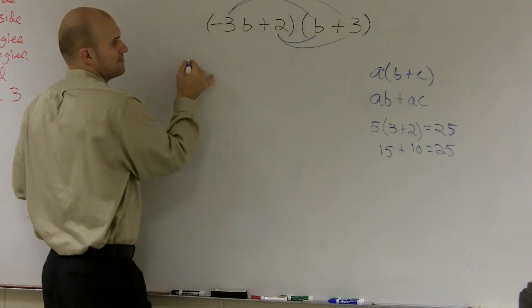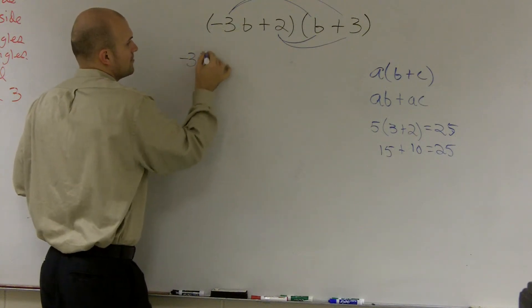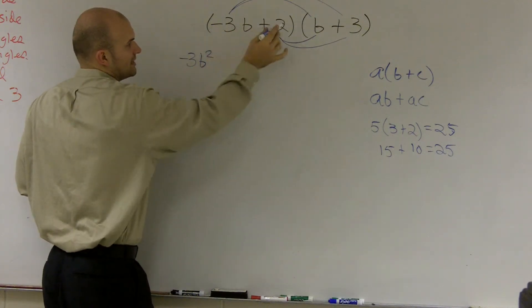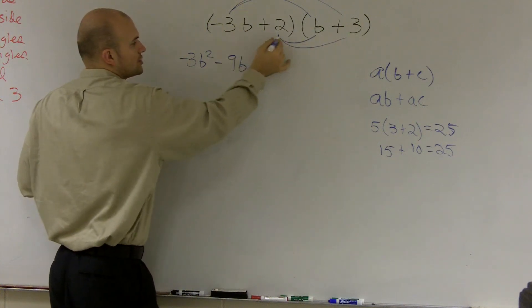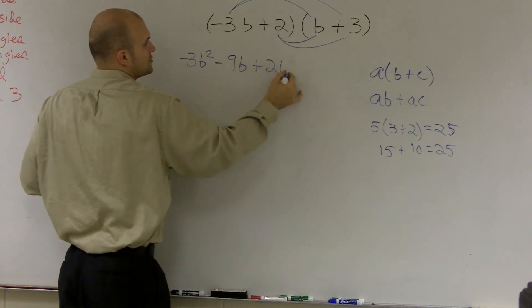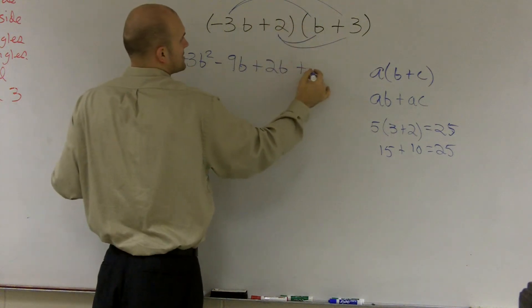So negative 3b times b is negative 3b squared. Negative 3b times 3 is going to be negative 9b. 2 times b is positive 2b, and 2 times 3 is positive 6.